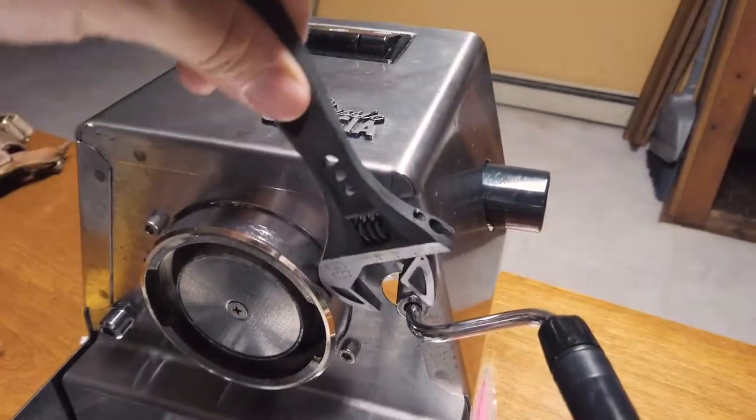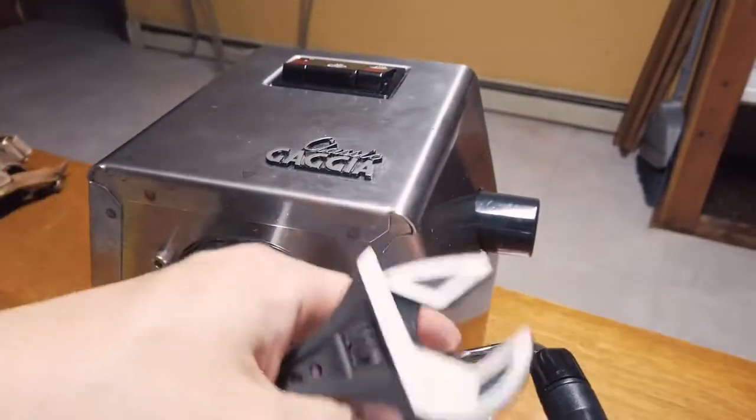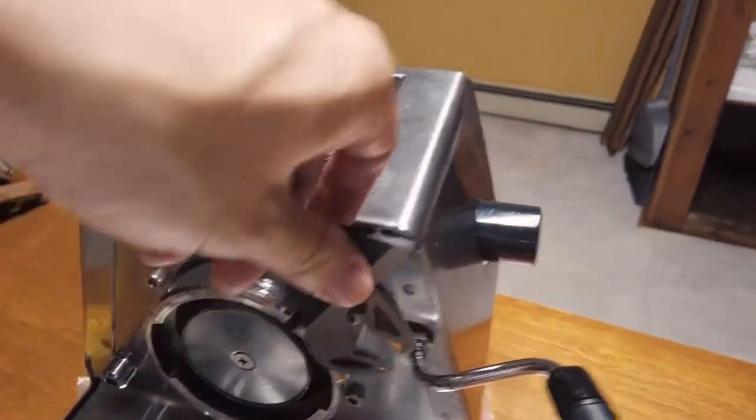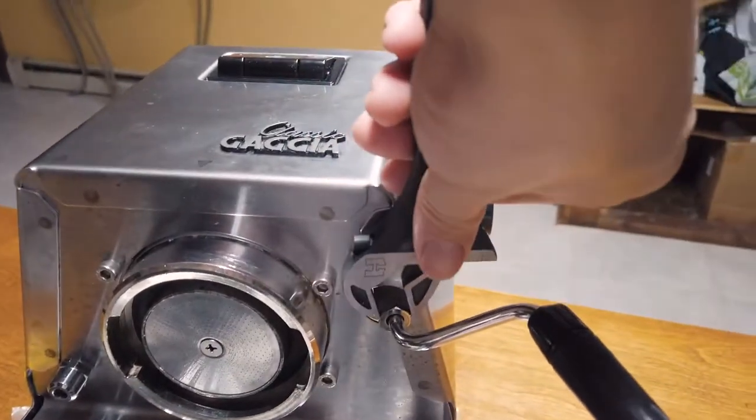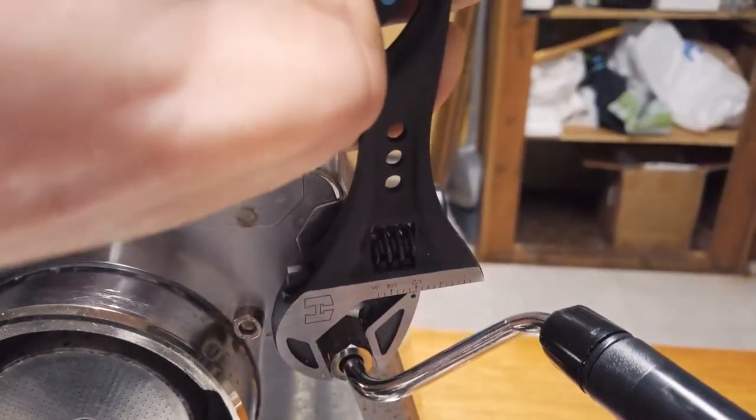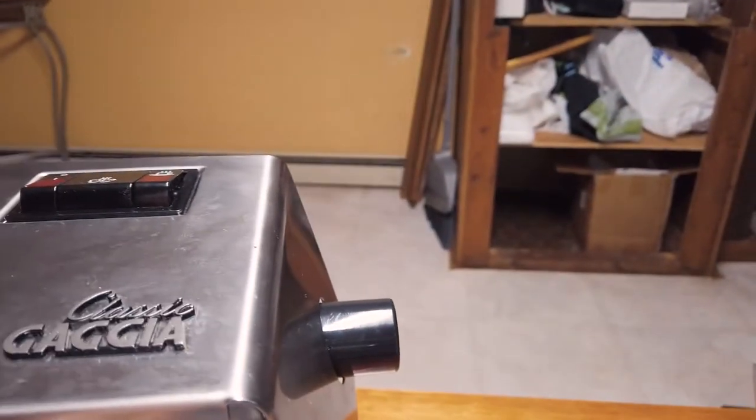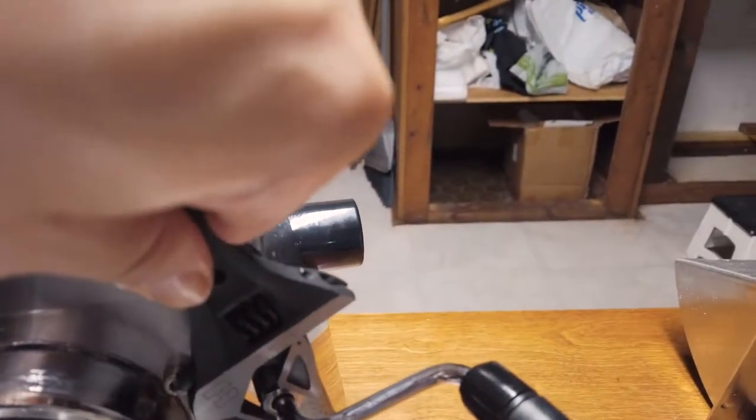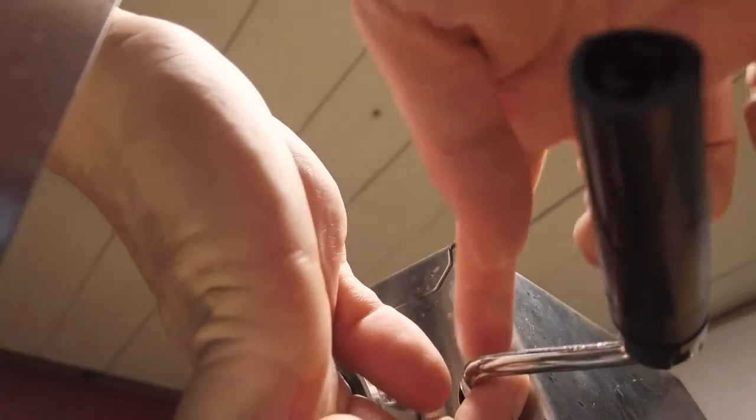The very first thing we need to do is use a wrench to unscrew the bottom part of the Gaggia Classic. You can use an adjustable one or a specific size. I don't know the exact size but I'm going to use my adjustable wrench. I don't know the direction but I'll try to guess.